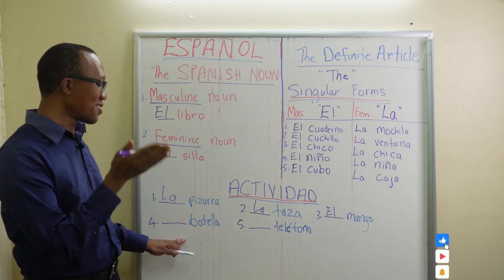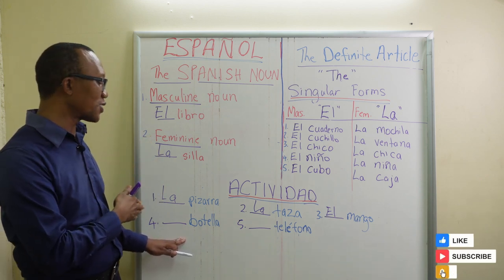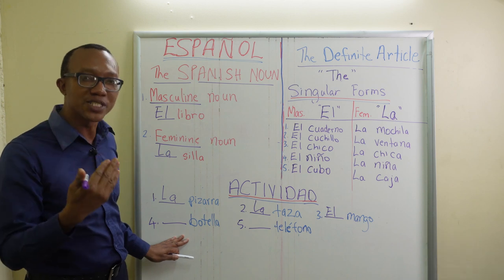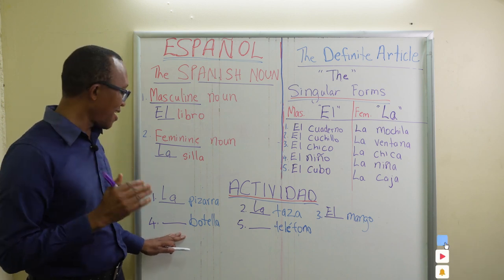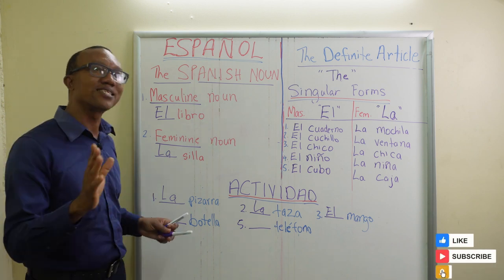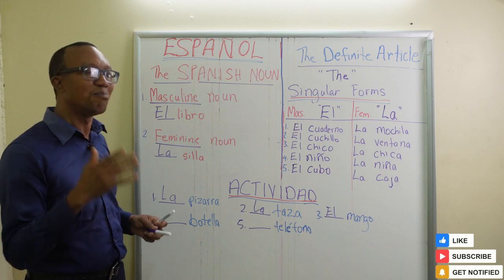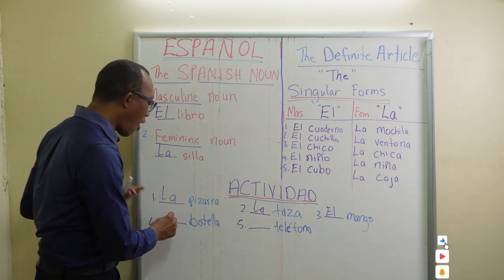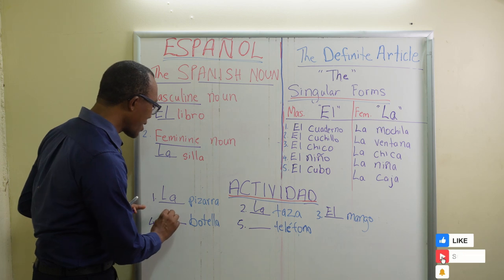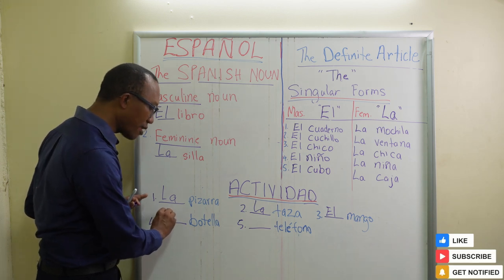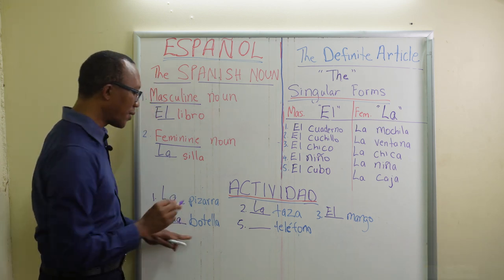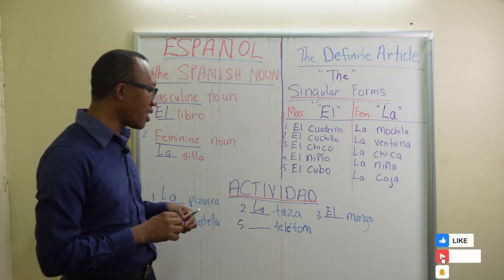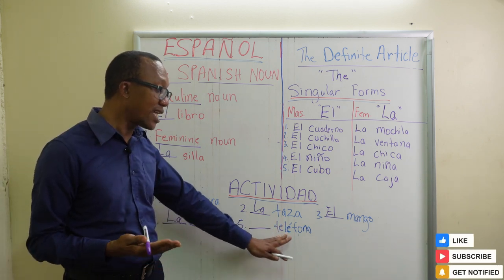Always make sure you are practicing — revisit the video so you can hear and pronounce the words correctly. Once you start speaking Spanish, you must sound correct in terms of the words. La botella means bottle.